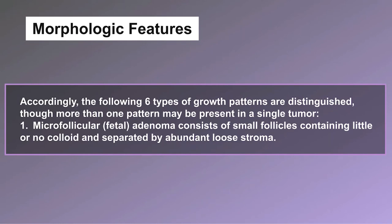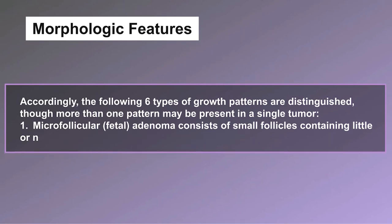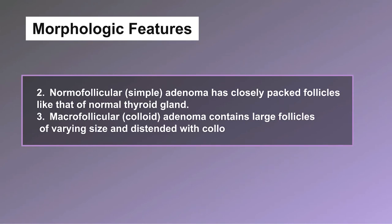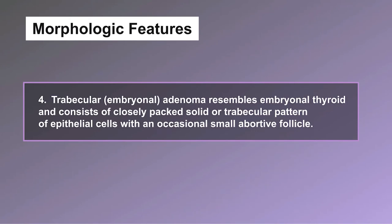Type 2: normofollicular (simple) adenoma has closely packed follicles like that of a normal thyroid gland. Type 3: macrofollicular (colloid) adenoma contains large follicles of varying size distended with colloid. Type 4: trabecular (embryonal) adenoma resembles embryonal thyroid and consists of closely packed solid or trabecular pattern of epithelial cells with an occasional small aborted follicle.